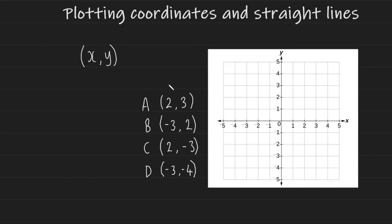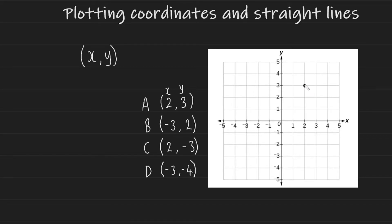Let's get into the first one. We're going to plot this coordinate here and label it A. My x coordinate is two and my y coordinate is three. I'm going to first begin by locating my x coordinate — I start at zero and go to two. Still keeping my pen here, I look at coordinate A and see the y value, which is positive three. Positive three on the y axis means I go up by three, and this is where my point is. I'll put a dot here and label it A. So we've gone two to the right in the x axis and three up in the y axis.